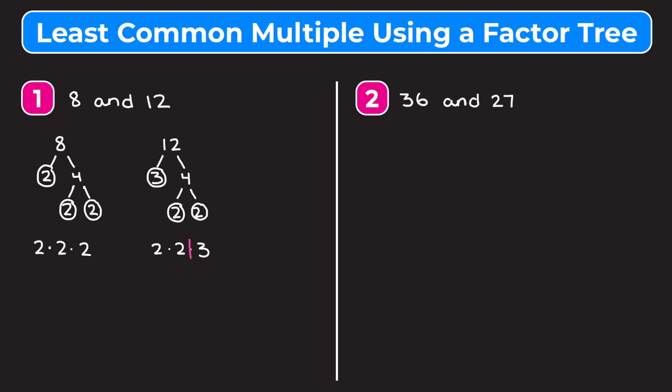A 3 shows up in our 12 prime factorization but not in our 8 one, so we're going to need that 3 in our answer for the LCM. So we know we're going to have one 3, and then we need to decide how many 2s to include — we want however many times 2 shows up the most. Two shows up three times in 8 and only two times in 12, so we take the larger count and use three 2s.